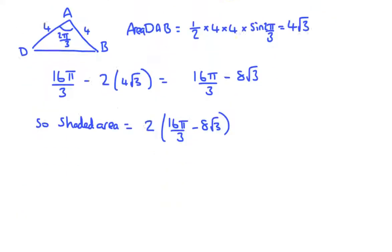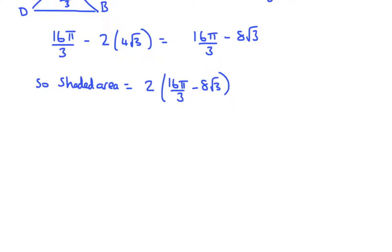In order to do that we need to make or pretend that this is written as something over three. So over three that would need to be twenty four. Twenty four over three is eight. Now we can take out two thirds. So that's sixteen pi minus twenty four root three.